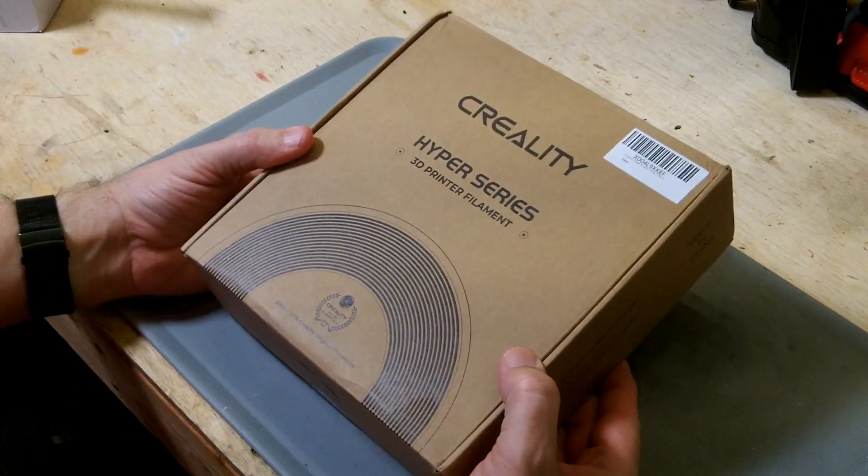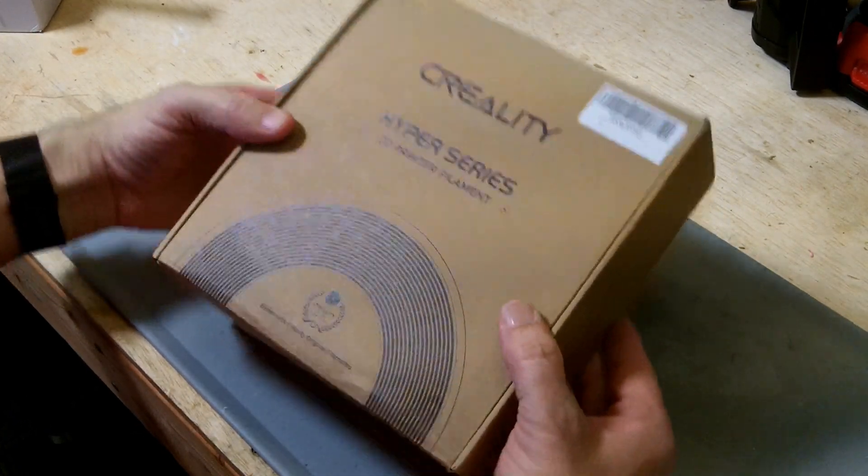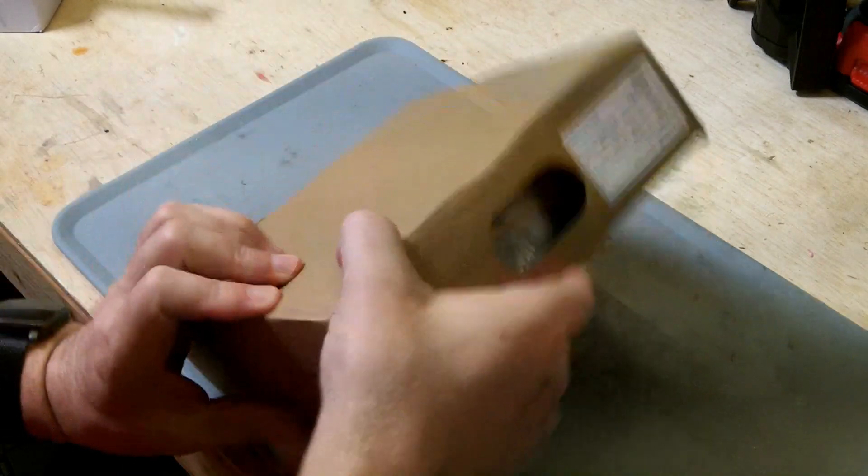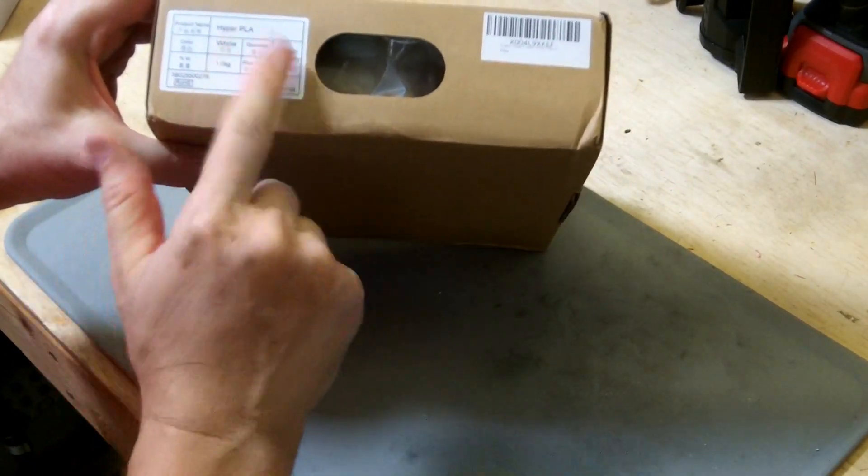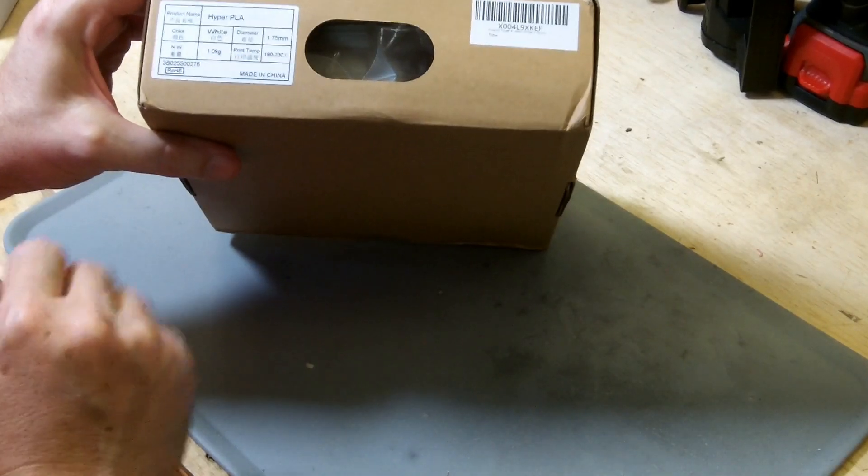This is a 1kg spool of Creality Hyper Series 3D printer filament. This happens to be white PLA, and it's a 1.75mm sized filament.